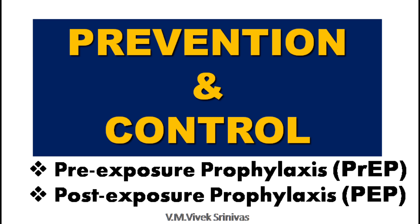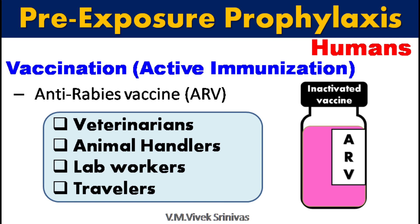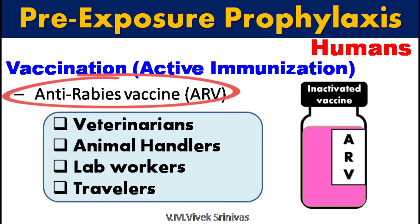Prevention and Control. Two different regimens are followed: one is for pre-exposure prophylaxis, that is before dog bite or before exposure to the virus, and another is for post-exposure prophylaxis, that is after dog bite or after exposure to the virus. For pre-exposure prophylaxis in humans, vaccination using anti-rabies vaccine ARV is followed.